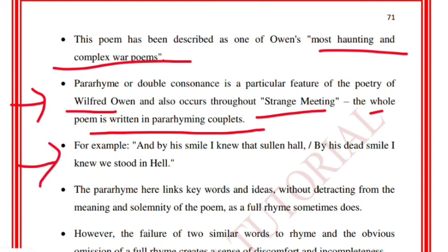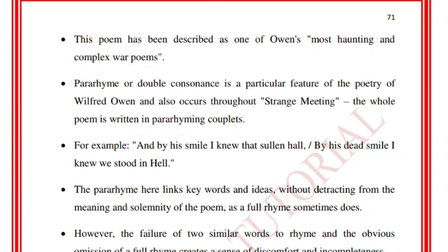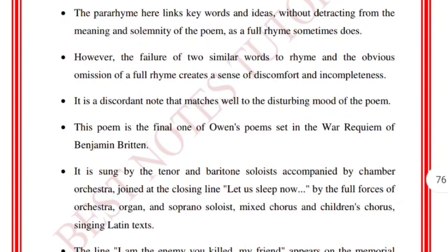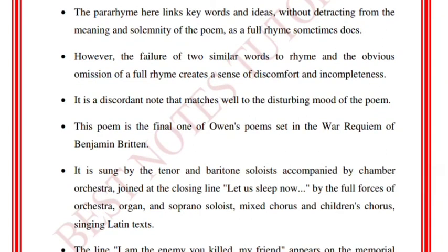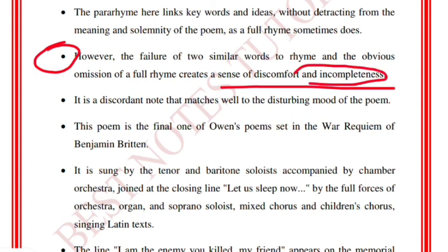For example: 'By his dead smile I knew we stood in Hell.' The para rhyme links keywords and ideas without detracting from the meaning and solemnity of the poem as a full rhyme sometimes does. The failure of two similar words to fully rhyme and the obvious omission of a full rhyme scheme creates a sense of discomfort and incompleteness. When the same type of words are used repeatedly, a feeling of incompleteness arises. It is a discordant note that matches well to the disturbing mood of the poem.